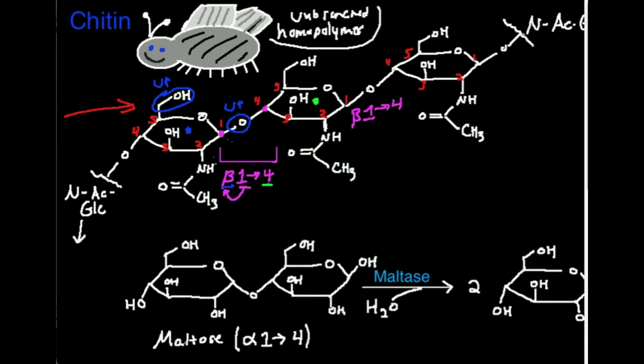One thing that would help you is to learn to draw this: on the one position it goes up, and it goes up to the 4 position on the next one. You can almost think of chitin — at least if you draw it in Haworth projections — as going in a kind of stair-step pattern, up and up and up. And that's chitin.